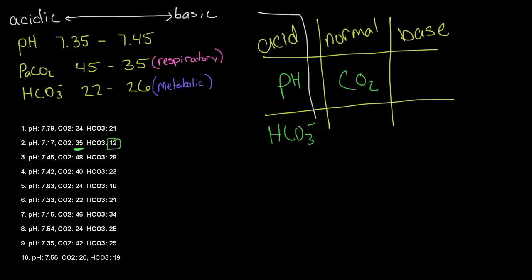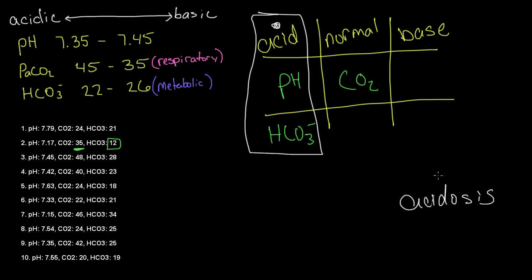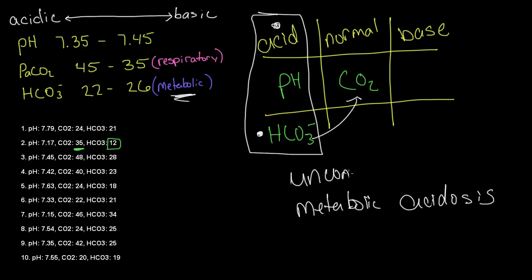So where's our tic-tac-toe? It is right here, using the acid column — acidosis. Which parameter made up our tic-tac-toe? This is our HCO3, which is a metabolic parameter, so we are in metabolic acidosis. And where's the other parameter? The CO2, this respiratory value, is in the normal column.